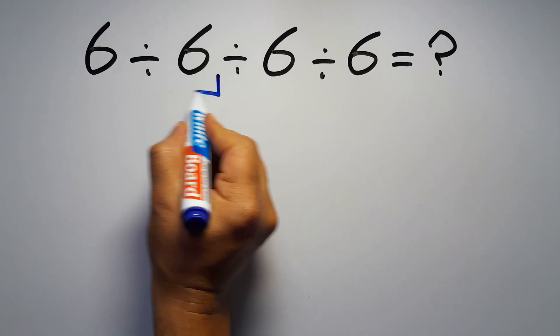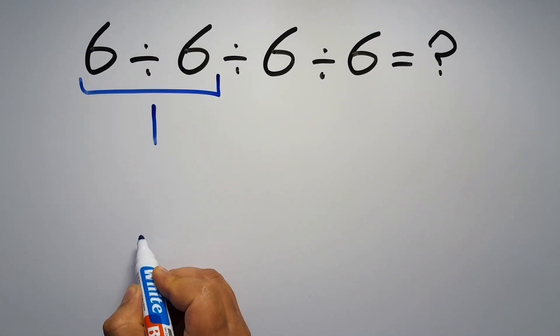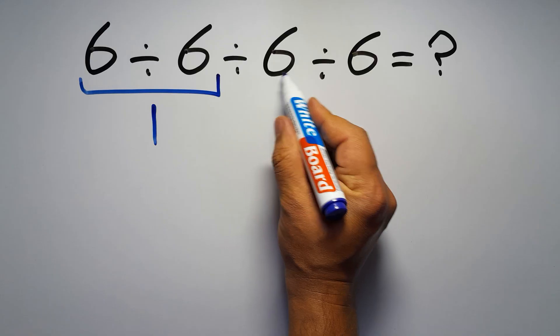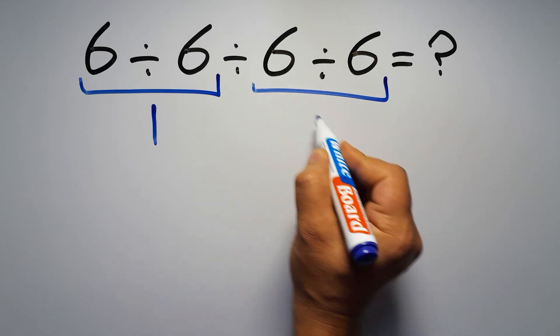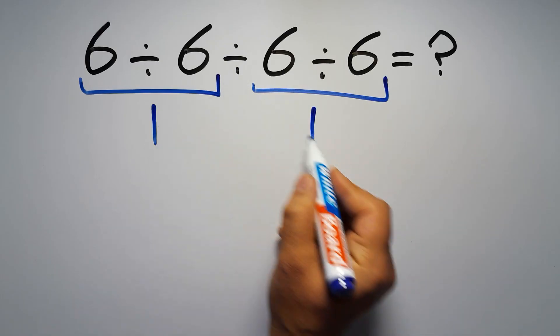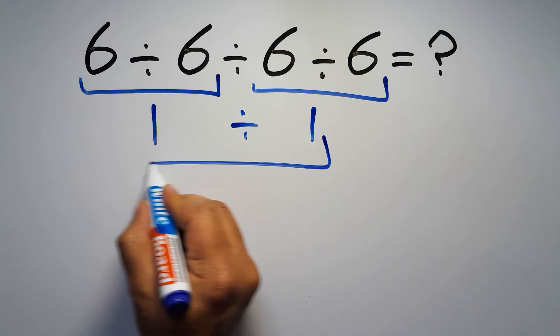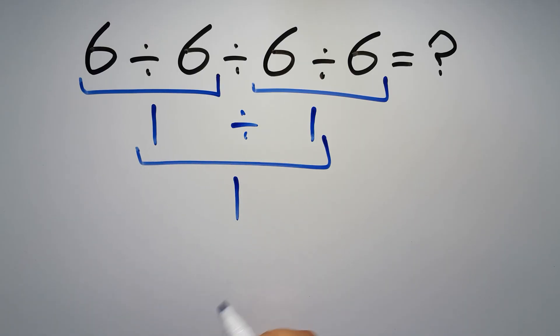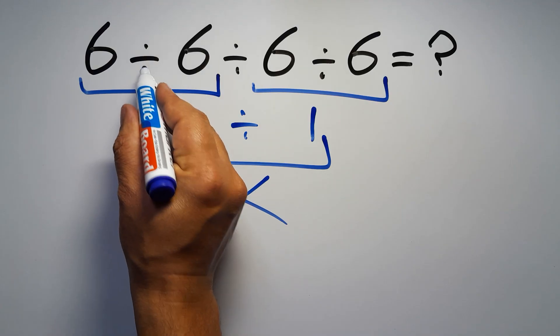6 divided by 6 equals 1, and again here we have 6 divided by 6, so 1 divided by 1 is just 1. But this answer is not correct because according to the rule of operations, when we have more than one division in an expression, we have to work from left to right.